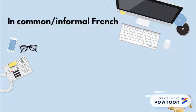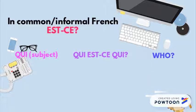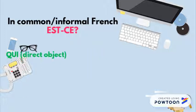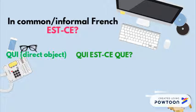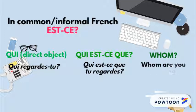In common or informal French, questions can be formulated with the construction est-ce que. For instance, a simple question with qui as subject becomes qui est-ce qui ? — Qui mange ? becomes Qui est-ce qui mange ? — Who is eating? Qui as direct object becomes qui est-ce que ? — Qui regardes-tu ? becomes Qui est-ce que tu regardes ? — Whom are you watching?